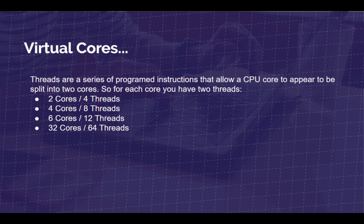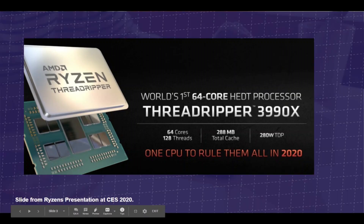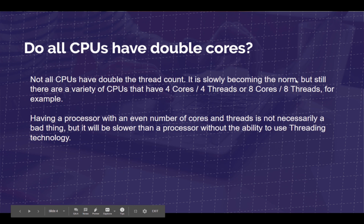In this video, we're specifically talking about threads. So what are threads? Basically, they are virtual cores. Threads are a series of programmed instructions that allow a CPU core to appear to be split into two cores. So for each core, you have two threads. So for instance, you've seen two cores, four threads; four cores, eight threads; six cores, 12 threads — and now we're all the way up to 32 cores, 64 threads. That's a processor by AMD called the Ryzen Threadripper. This is a super big processor, and it also comes with a pretty solid price tag.